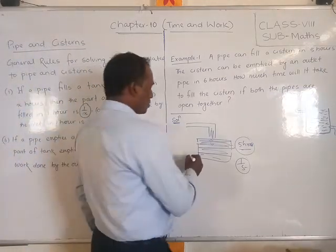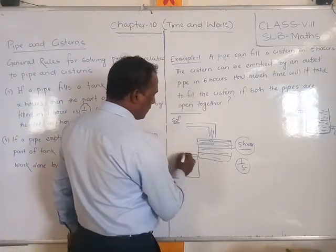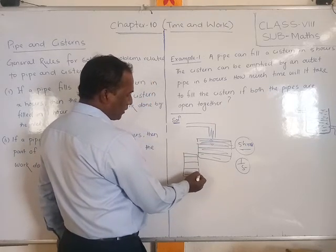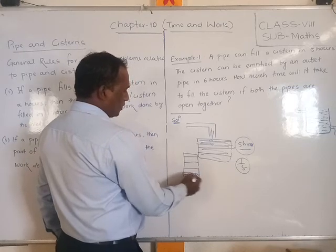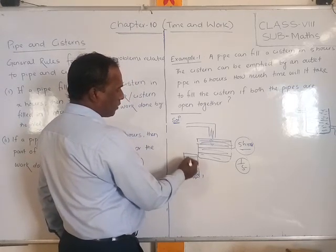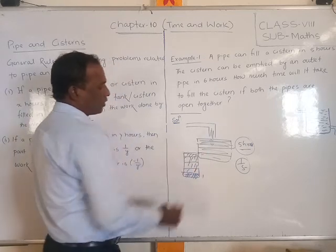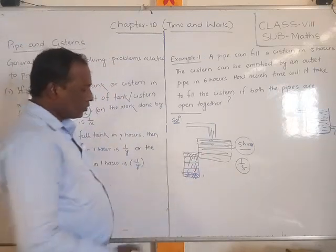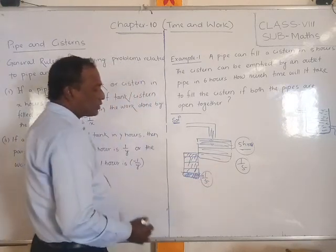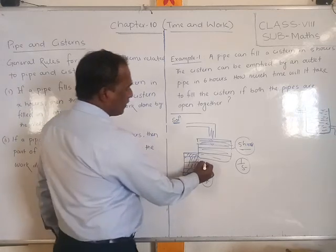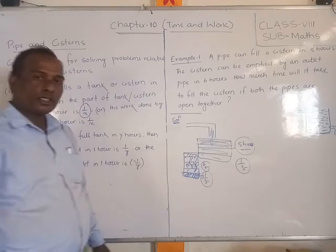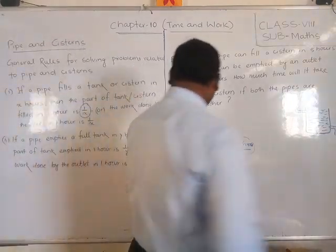Suppose the pipe takes 5 hours to fill this tank completely. Then how much is filled in 1 hour? The total tank is divided into 5 parts, so in 1 hour, 1 by 5 is filled. In 2 hours — 2 by 5, in 3 hours — 3 by 5, and in 5 hours — the tank is totally filled. So that is why in 1 hour, 1 by 5 is completed.